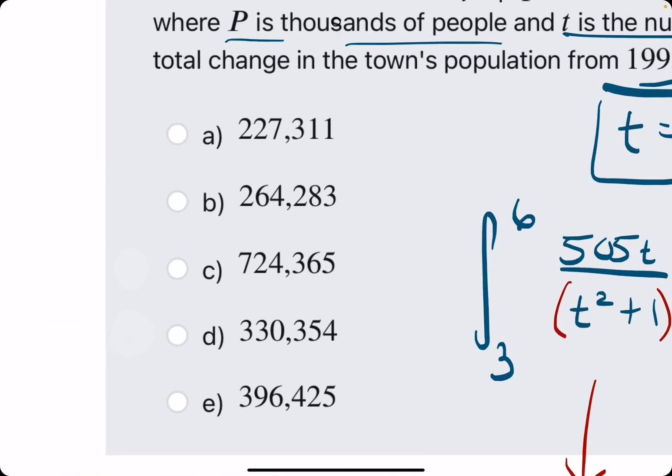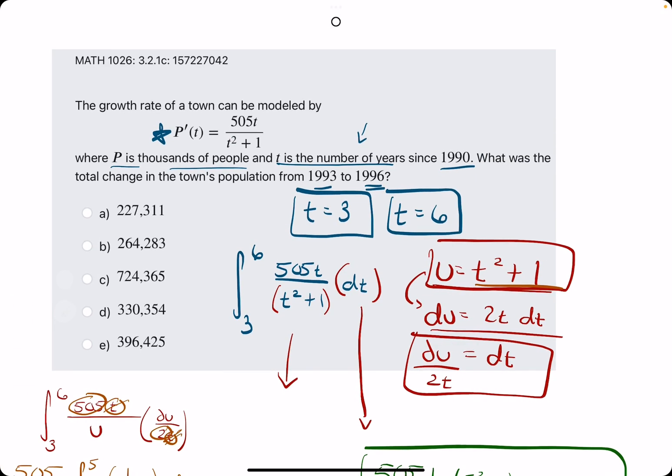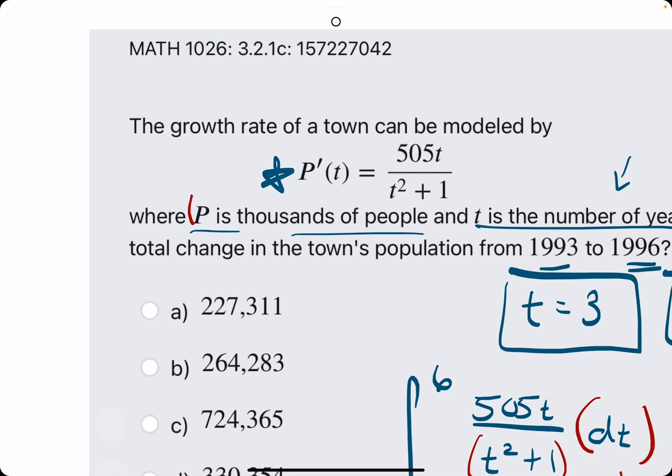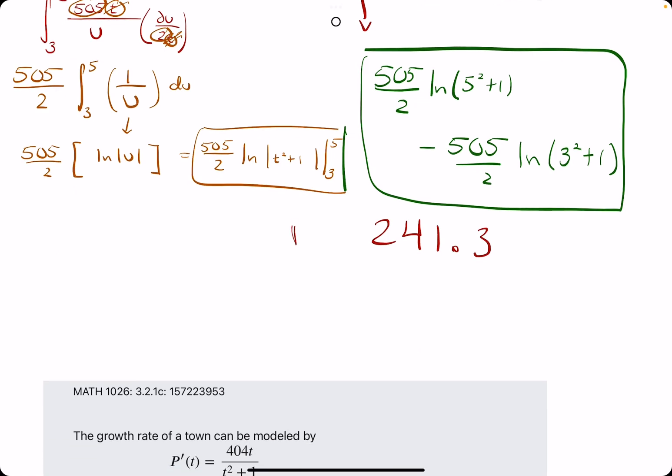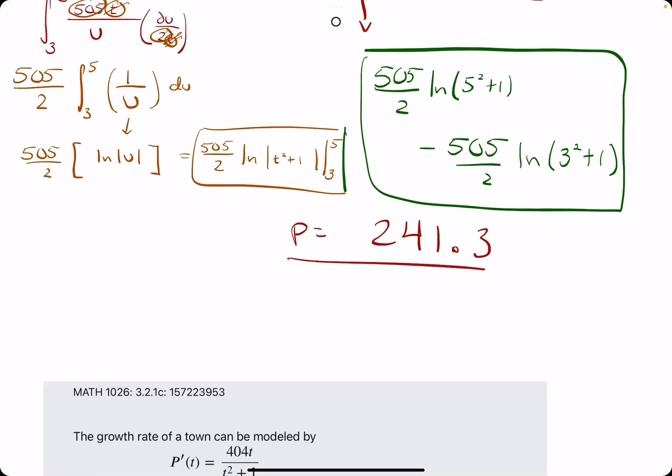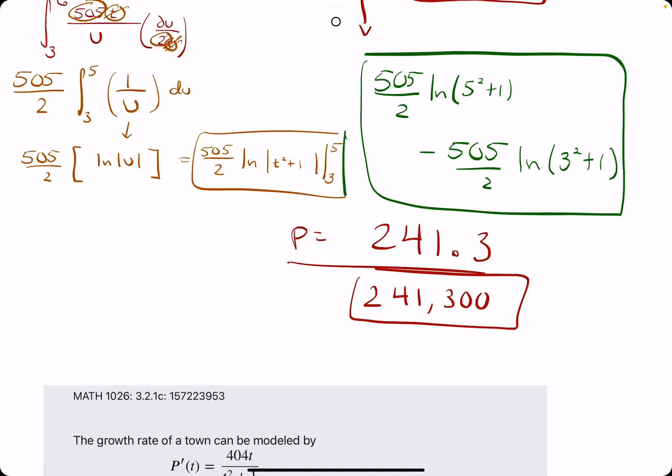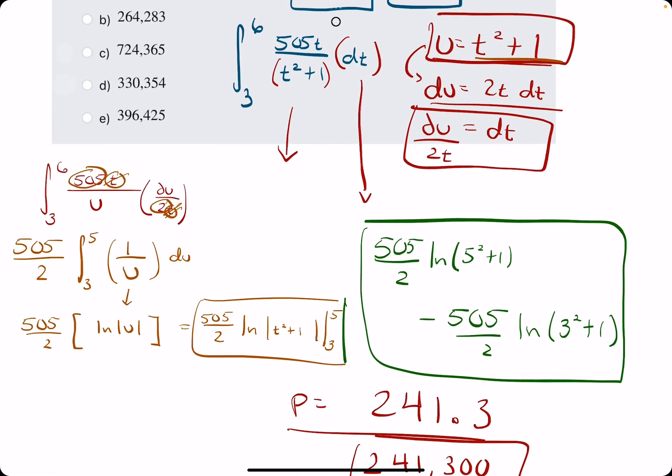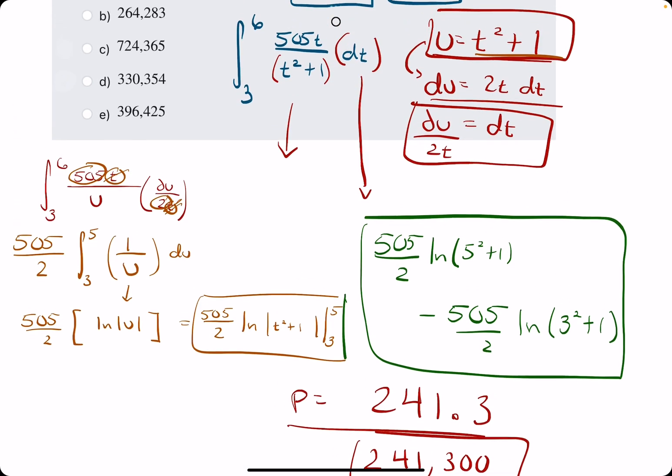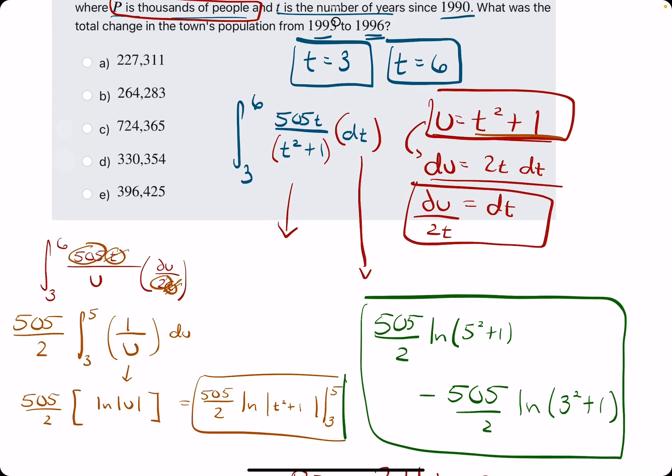Now, mind you, look at these crazy answers. They're in the hundreds of thousands. And the reason is P is in thousands of people. So P equals 241.3. But what this represents is not 241 people, but 241,000 people, specifically 241,300 people. So picking the closest answer to that, well, yeah, that's lovely.